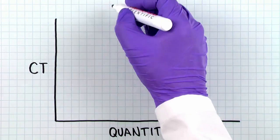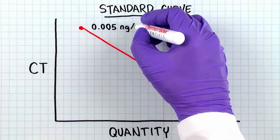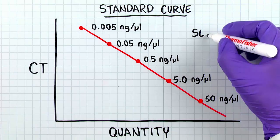The CT values for each dilution of the standard are plotted on a graph, and the software generates a regression line that fits the data.